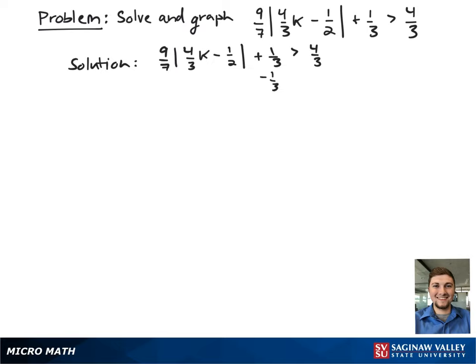So after rewriting, we're going to first subtract 1 third from both sides of the inequality. Next, we're going to multiply both sides by 7 ninths to clear the fraction on the left hand side and get the absolute value by itself.